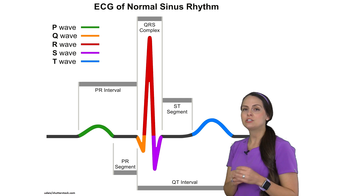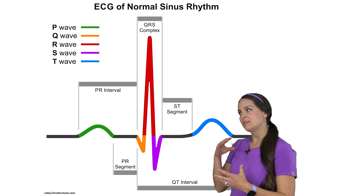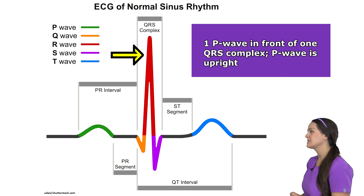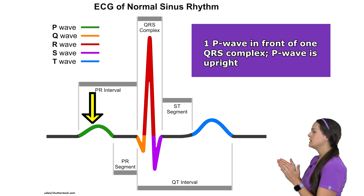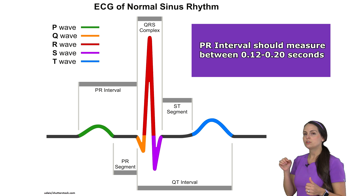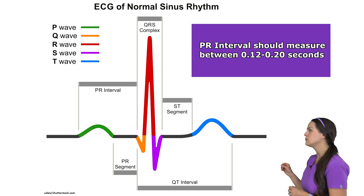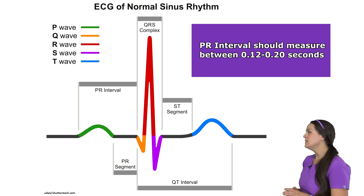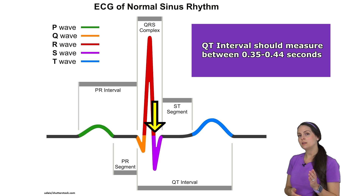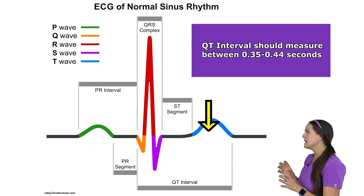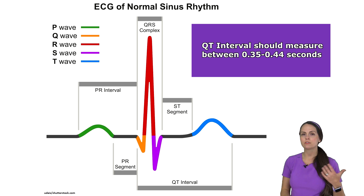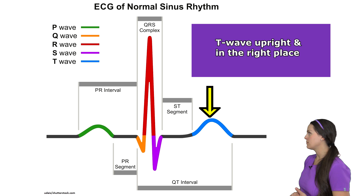What you want to take away from this is how that ECG waveform should look and what certain parts should measure, because you need that information when analyzing abnormal rhythms. You want one P wave in front of one QRS complex, and that P wave should be upright. From the beginning of the P wave to the beginning of the QRS complex is the PR interval, which should measure anywhere between 0.12 to 0.20 seconds — that's the delay in conduction by the AV node. The QRS complex should measure less than 0.12 seconds. The QT interval, from the beginning of the QRS complex to the end of the T wave, can measure anywhere between 0.35 to 0.44 seconds, varying depending on gender and heart rate. And the T wave should be upright and where it's supposed to be.